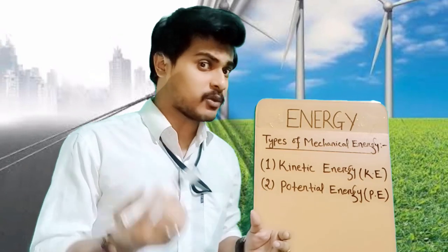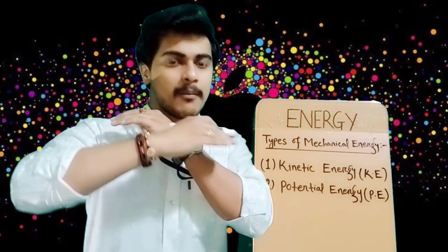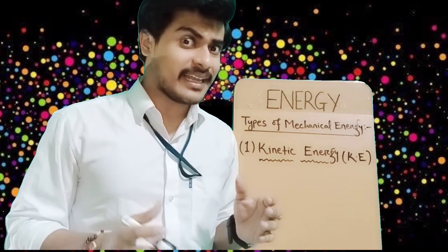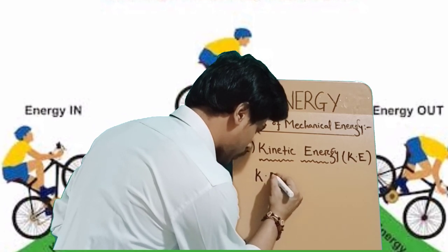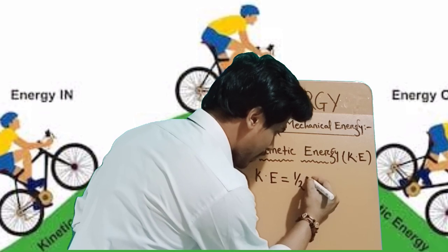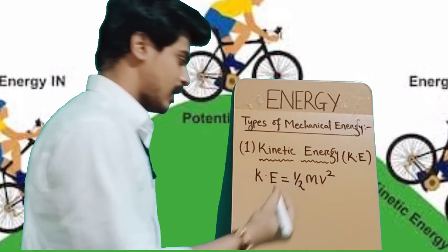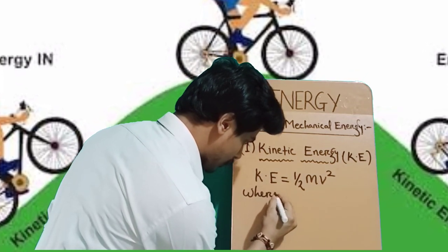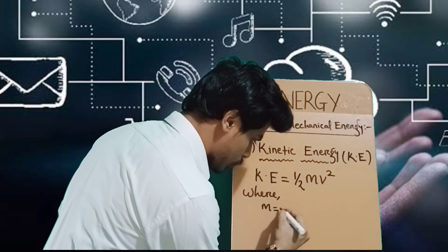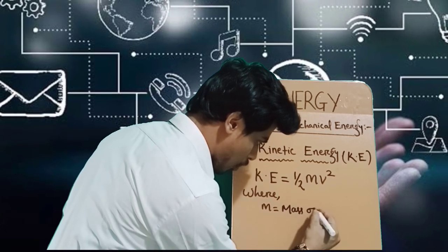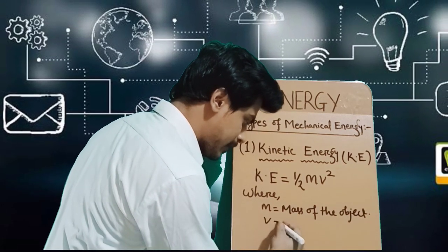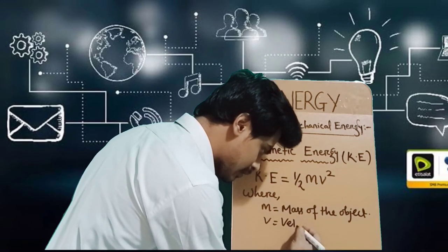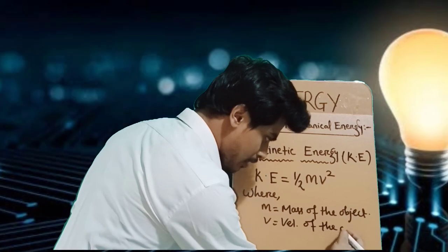The energy possessed by any object by virtue of its motion is called kinetic energy. The kinetic energy of an object is given by: K.E. = half M V squared, where M is equal to the mass of the object and V is equal to the velocity of the object.